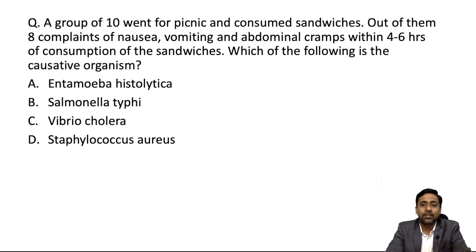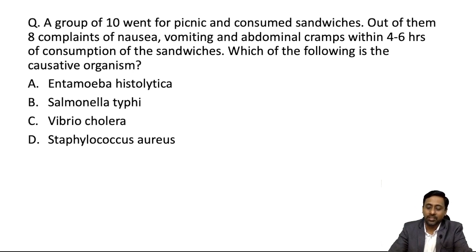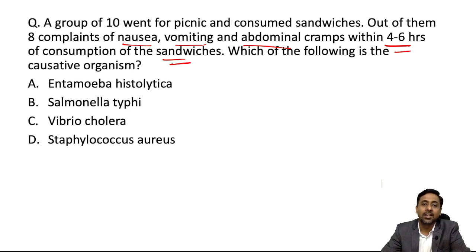To answer this question, we need to know the causes of food poisoning depending upon the duration of incubation and the common foods responsible. In this question, the duration mentioned is 4 to 6 hours, and there is a history of consumption of sandwiches. So we have two key pieces of information: first, the duration of incubation; second, the food. Third, the symptoms — nausea, vomiting, abdominal cramps — with no diarrhea.